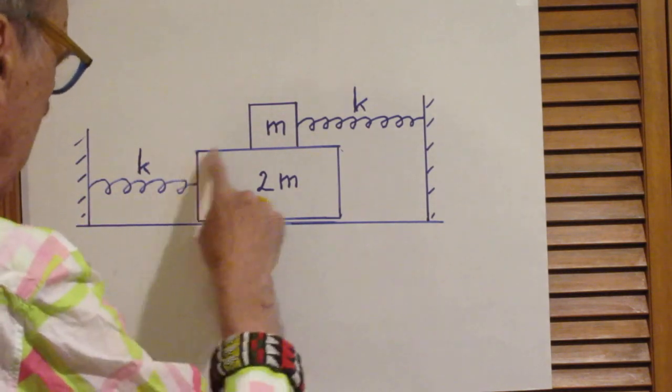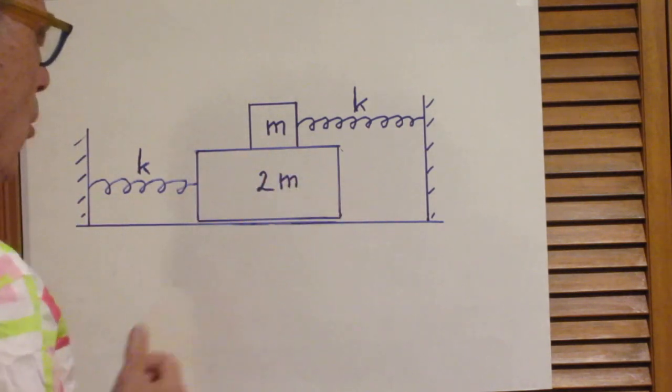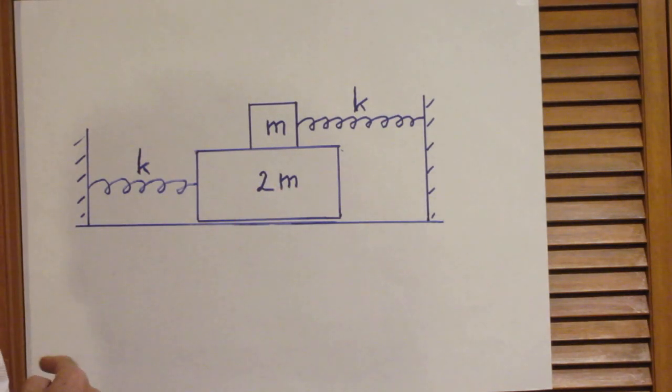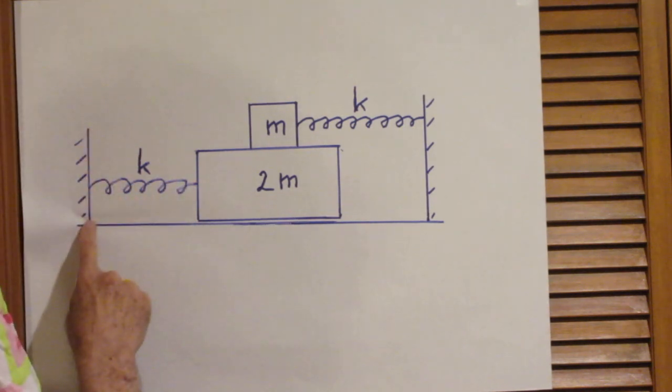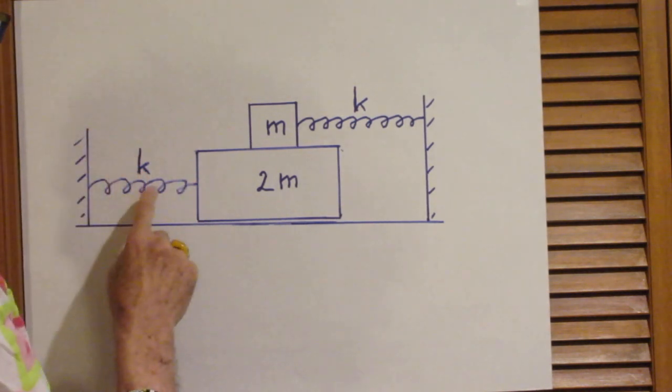This is a block, let's say a wooden block, which has a mass 2m. And it is connected with a spring to the wall, and the spring has spring constant k.